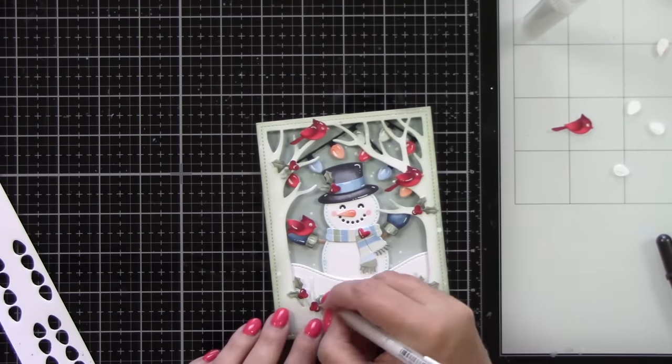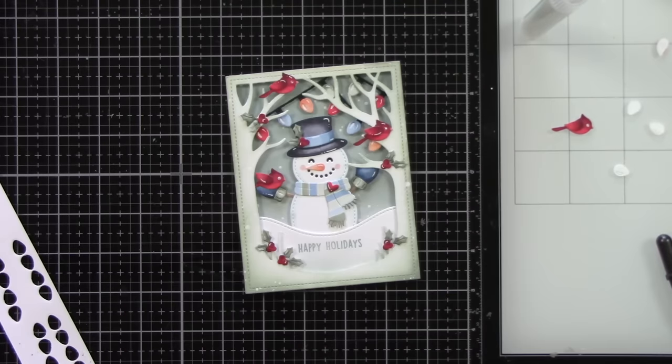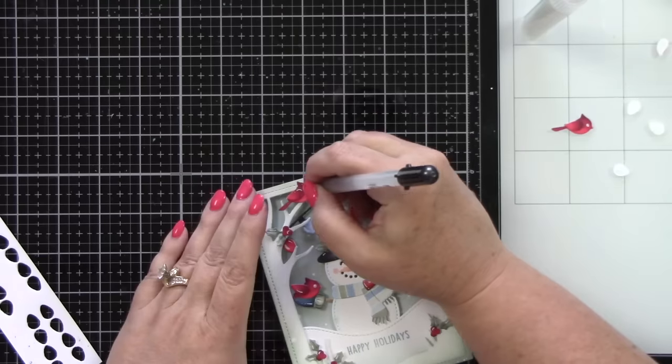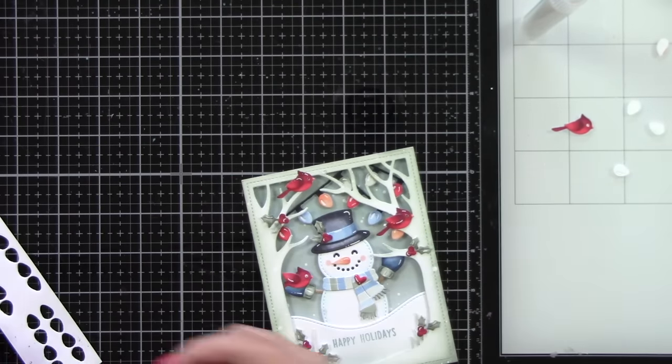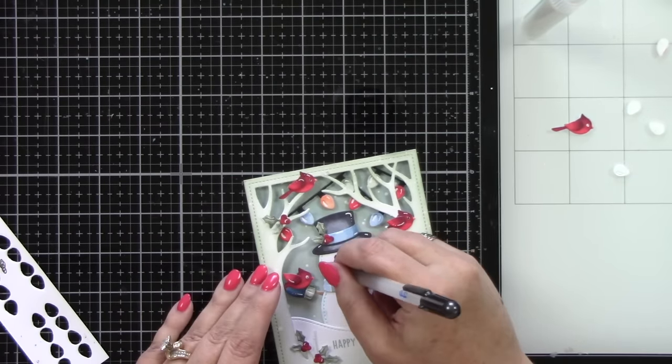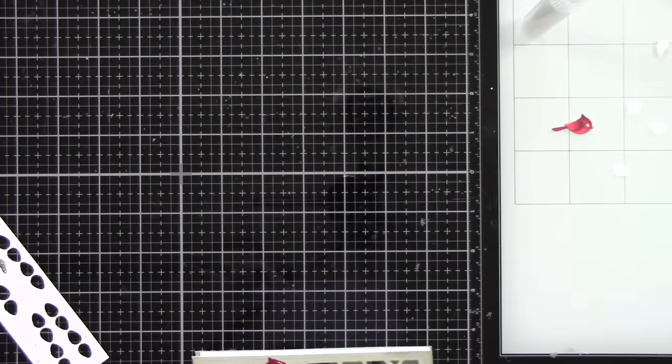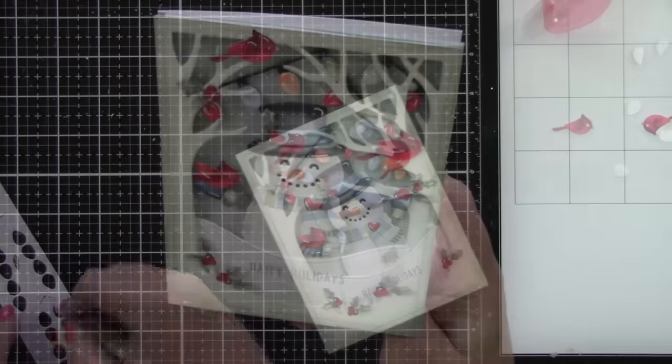And this will be added to a white A2 size card base. And then I'm going to add some black glaze pen to the eyes of the birds. And just to brighten up his mouth and his eyes on the snowman, just to make it a little bit shinier.